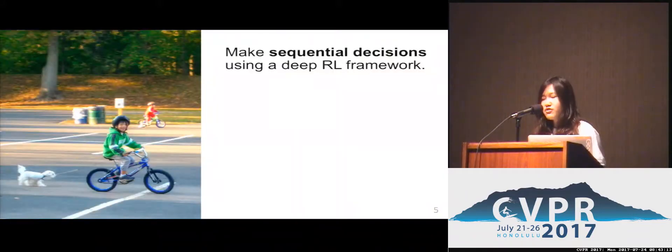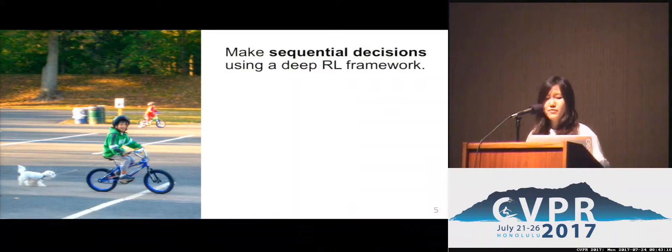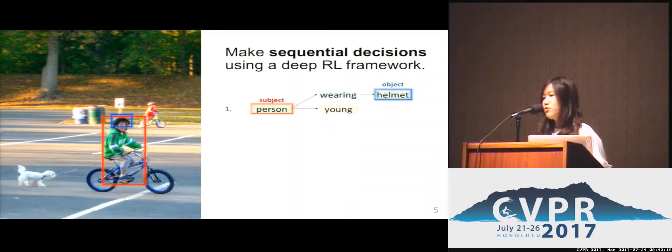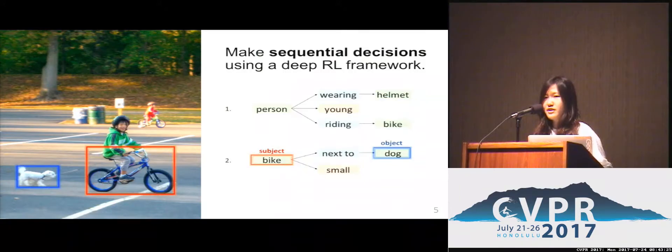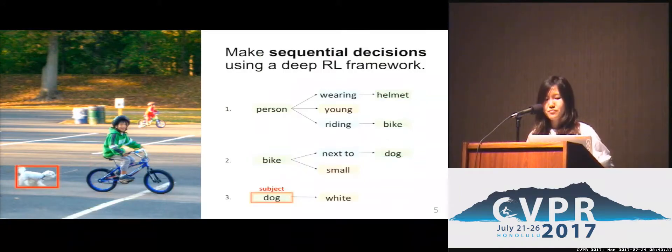Our algorithm frames this as a sequential decision making problem. In each time step, we focus on one subject and one object pair in the image and predict a relationship and an attribute describing them.